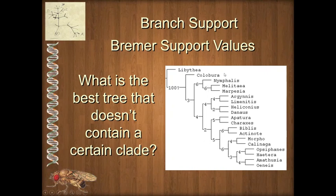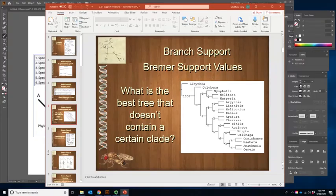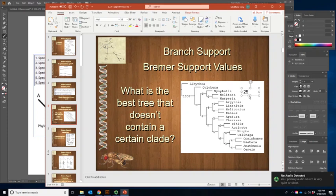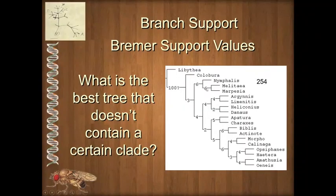We look for how far away, in terms of tree score, we have to get before finding a tree that breaks up those relationships — in this case it's six extra steps. So let's say the overall tree length was 254, and we find a tree that's 260 — six steps longer — that breaks those up. That means there are six characters, or a combination of characters, supporting that relationship. There are other relationships where we only have to go two steps away, so we're less confident in those. The bigger the Bremer support number, the more confident we are.